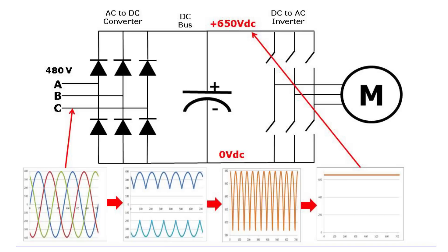If you look at the schematic in front of you, you will see three arrow-looking devices on the left. These arrow-looking devices in the electrical world are called diodes. In the mechanical or plumbing world, we might think of these as check valves — they basically let current flow in only one direction, that is the direction of the arrows. So we have an AC-to-DC converter, or just 'converter' for short, which converts the three-phase AC power to DC.